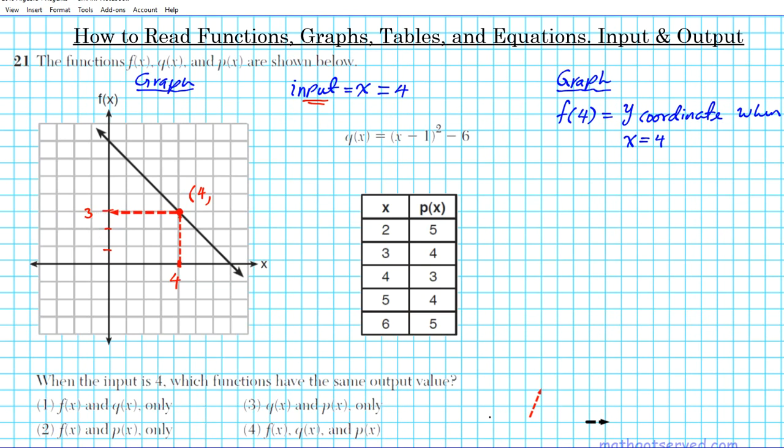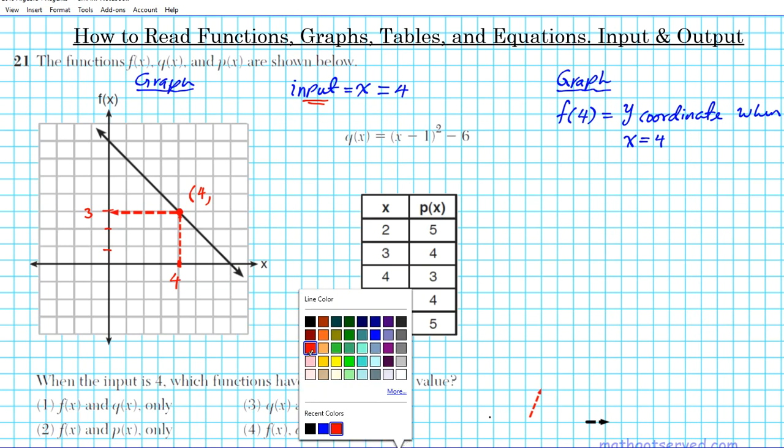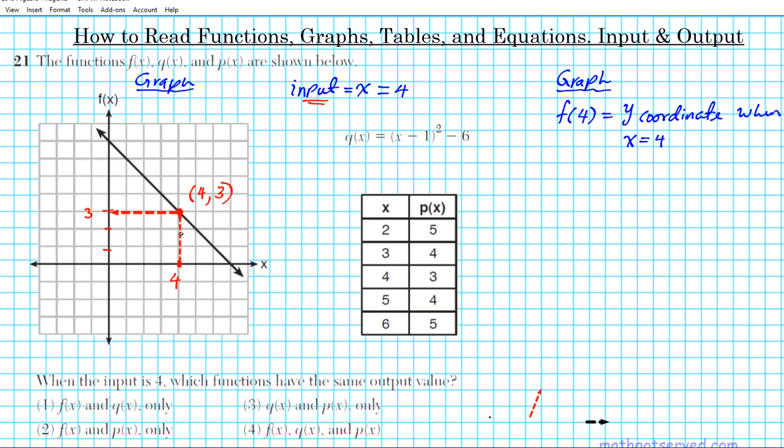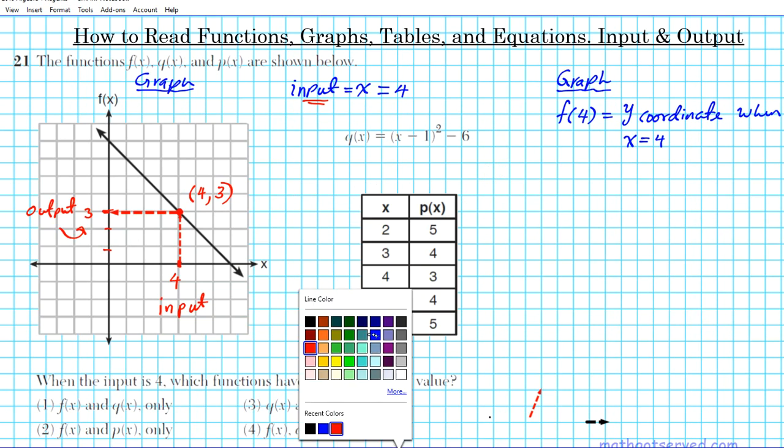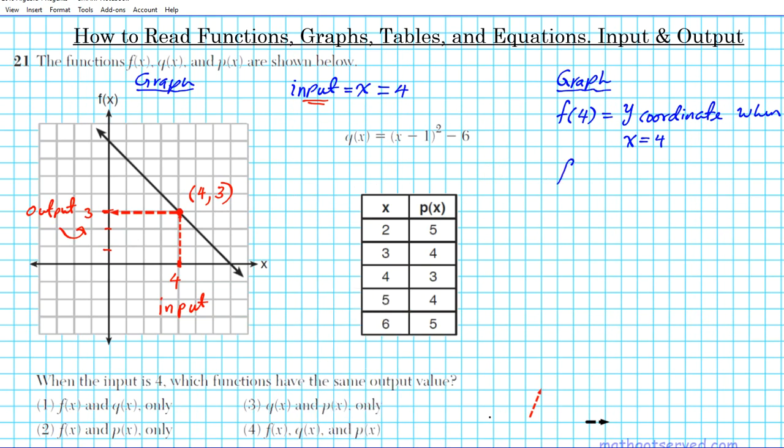Alright, so the ordered pair that's associated with x equals 4 is (4, 3). Alright, so the question is what is the output when the input is 4? So 4 represents the input and guess what, the output is the y coordinate associated with it, so this is your output value which is 3. Okay, so from this graph we can clearly see that f(4) is equal to 3.